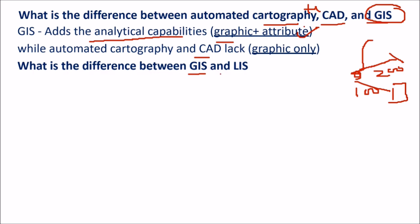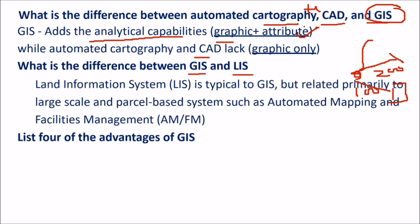What is the difference between GIS and LIS? GIS is geographic information system and there is also a land information system. People often confuse that LIS is just a GIS, but land information system is specific to GIS — LIS is a specialized GIS related primarily to large scale and parcel-based systems such as automatic mapping and facilities management.